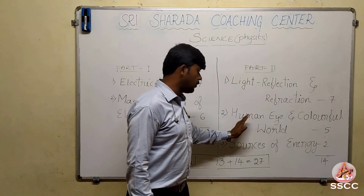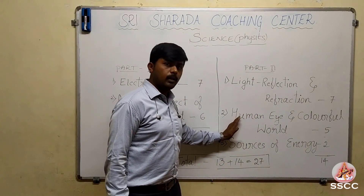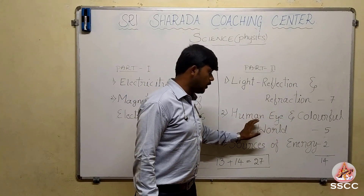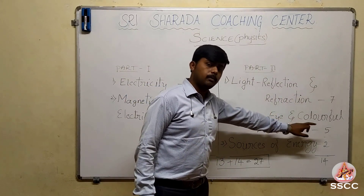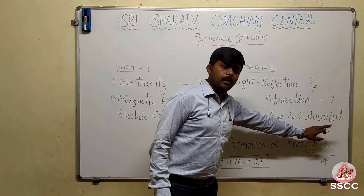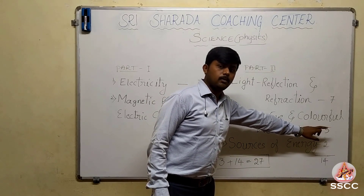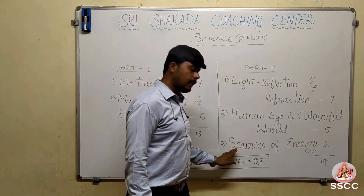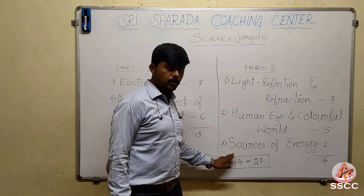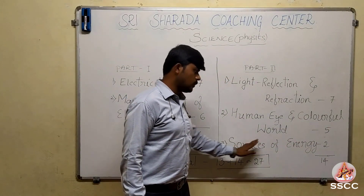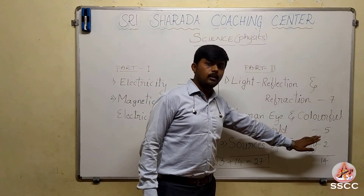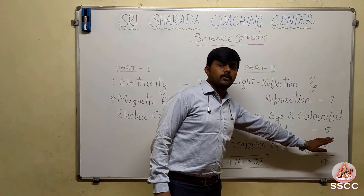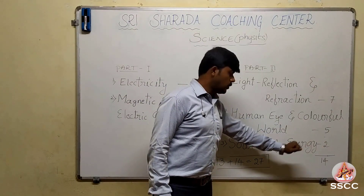The next chapter in part two is Human Eye and the Colorful World. Here you can expect three to five marks from this chapter. And the last chapter in part two, Sources of Energy — you can expect two marks from this chapter.